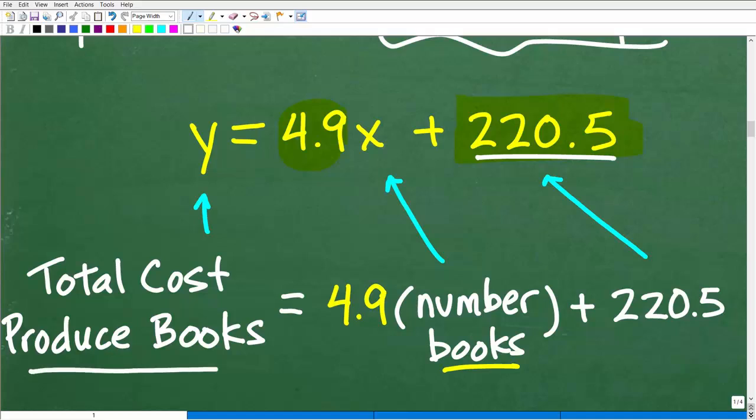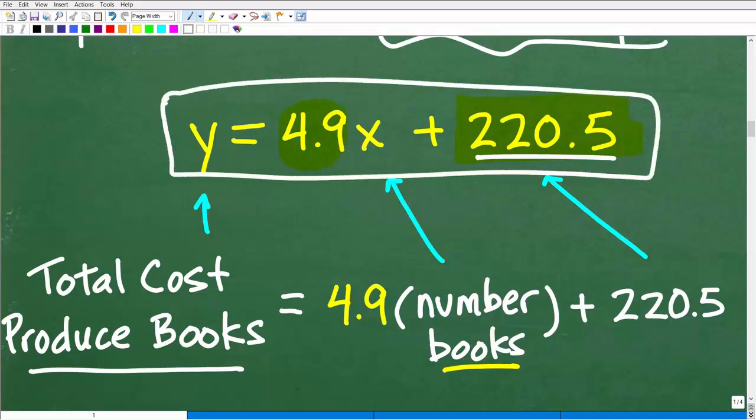You could even write your linear model this way. You could say total cost to produce books is equal to 4.9 times the number of books plus 220.5. Or you could write a nice linear equation like this. You're just going to have to define what y and x are. Or you could even use function notation like f of x. Different ways you could do this. You have to be the judge whether, in fact, you answer this correctly.